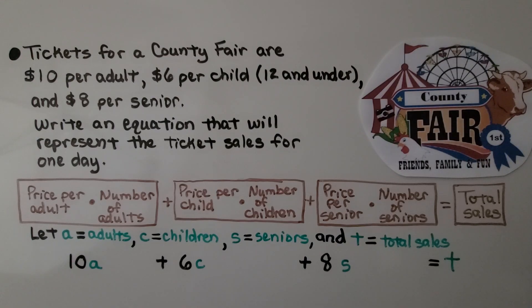Tickets for a county fair are $10 per adult, $6 per child, that is 12 and under, and $8 per senior. Write an equation that will represent the ticket sales for one day.